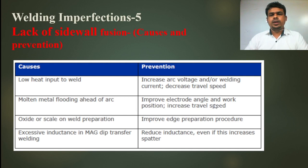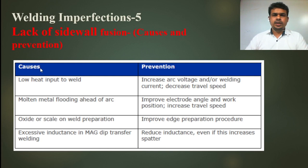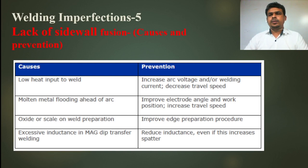Molten metal floating ahead of the arc can be corrected by improving electrode angle, work position, and increasing travel speed. Oxide or slag on the weld preparation should be addressed by improving edge preparation procedure. Also, introduce appropriate inductance in MIG dip transfer welding and reduce inductance if needed. These are the preventive actions for sidewall fusion, and we must take care of these during welding.